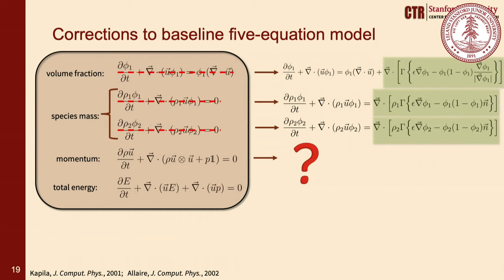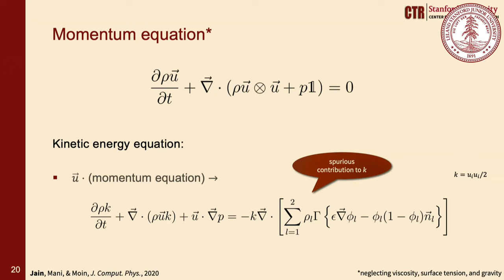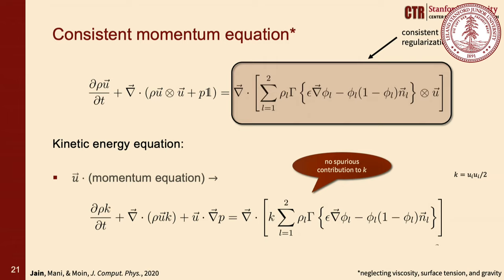Taking a dot product of velocity with the discrete momentum equation gives the kinetic energy transport equation. The interface regularization term in the baseline kinetic energy equation was not in conservative form and thus spuriously contributed to total kinetic energy. We propose a correction to the momentum equation — the consistent momentum equation — where the regularization term is in conservative form, so it does not spuriously contribute to total kinetic energy.